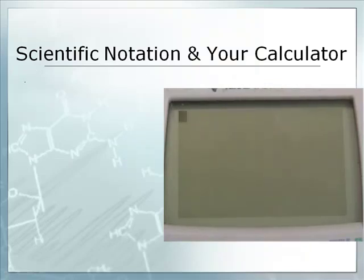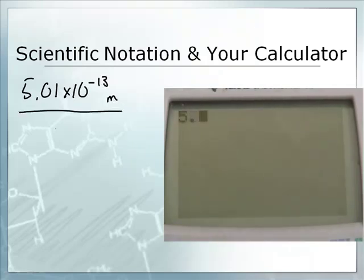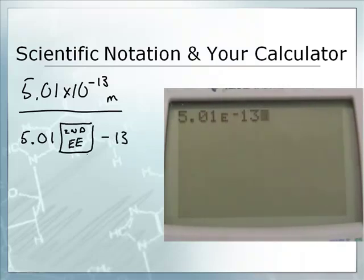I want to talk about making sure you know what it should look like on your calculator. Because it's kind of weird. So let's say I've got 5.01 times 10 to the minus 13th meters. Let me put that in. 5.01, then second EE, negative 13. 5.01, and on your screen it has an E. A capital E, negative 13. That means 5.01 times 10 to the negative 13.